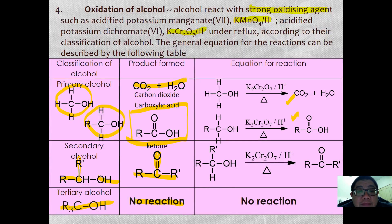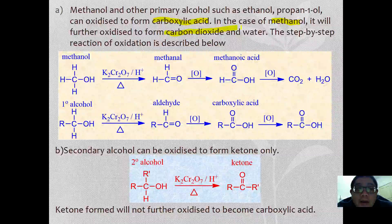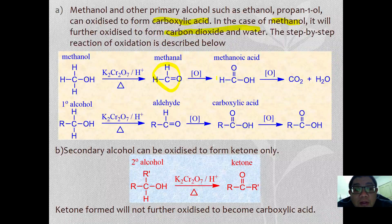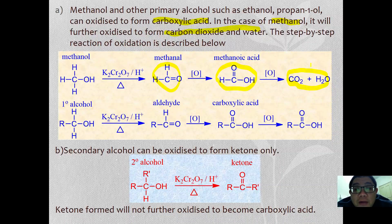Methanol and other primary alcohols such as ethanol and propan-1-ol can be further oxidized to form carboxylic acid. However, in the case of methanol, it will further oxidize to become carbon dioxide and water. The step-by-step reaction is: methanol → methanal → methanoic acid → carbon dioxide + water. There is no way to stop the reaction partway because it is very hard to control the conditions.